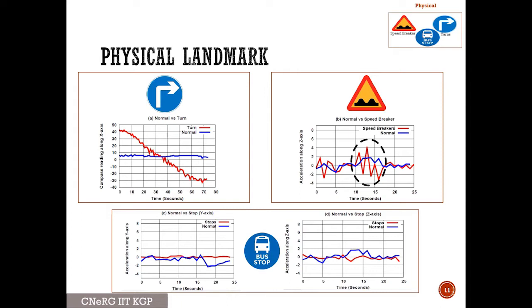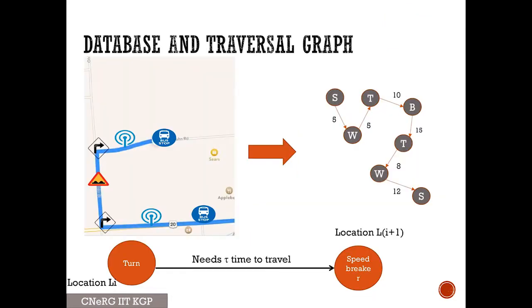We can also identify bus stops because when the bus approaches a stop its speed nearly becomes zero, and we see changes in the accelerometer. So using the sensors we can identify different kinds of landmarks, and once we identify those landmarks we construct the database of landmarks.